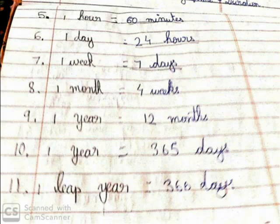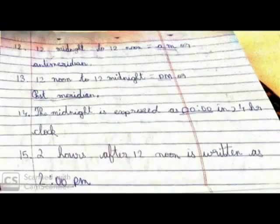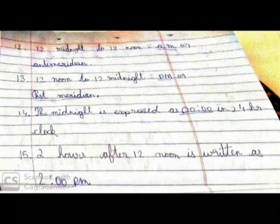One week equals 7 days. One month equals 4 weeks. One year equals 12 months. One year has 365 days, while a leap year has 366 days. From 12 midnight to 12 noon is A.M., or ante-meridian. From 12 noon to 12 midnight is P.M., or post-meridian.